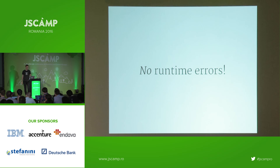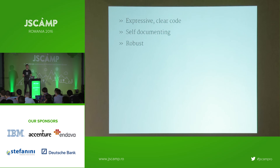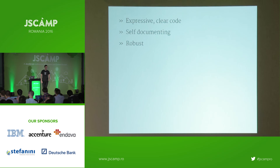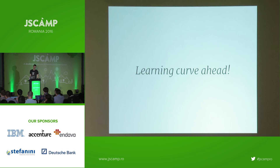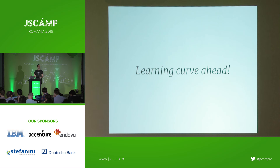Elm is often described as functional, typed, and compiled — which is a bit comp-sci and boring. I prefer: expressive, self-documenting, and robust. There is a bit of a learning curve. Elm is very different from JavaScript. For anyone who's done functional programming or touched Haskell or ClojureScript it'll be more straightforward, but I'd encourage you to stick with it — the syntax becomes really nice.